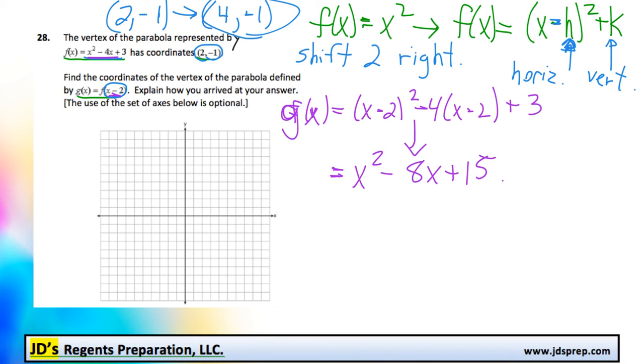And once we have it in this form, we can find the x value of the vertex by using the equation x equals negative b over 2a. So, if we do that, we would do negative of negative 8 over 2 times 1.